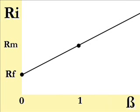And thus if we graph this, the beta of 1 is associated with the return of the market, and we call this the security market line.